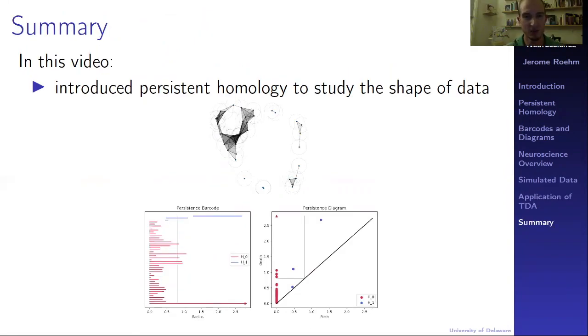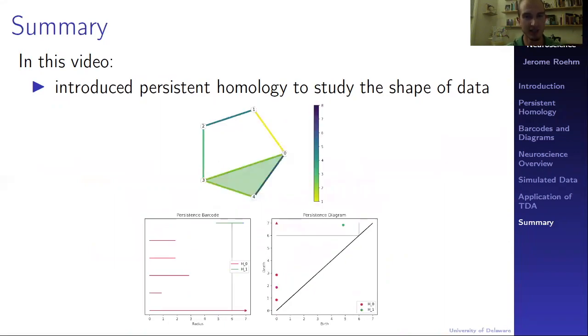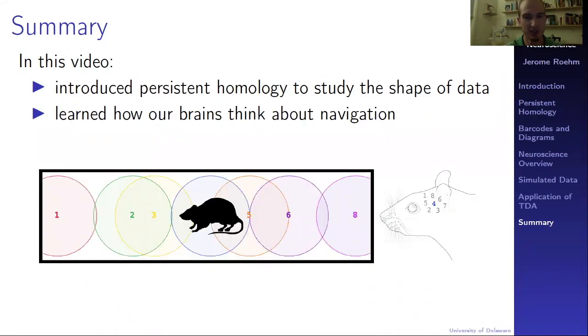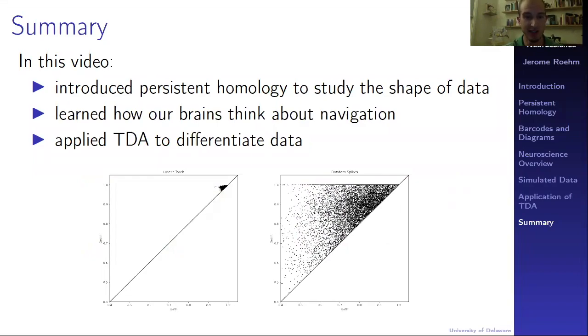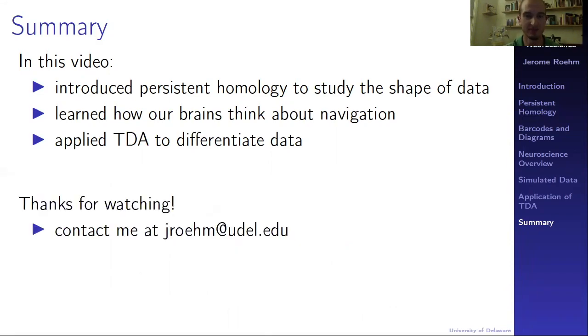In summary, we introduced persistent homology to study the shape of data, both in a geometric context as well as a non-geometric one. We learned how our brains think about navigation and applied TDA to help differentiate data. Thanks so much for watching. In order to make this video short and accessible, I omitted many details. If you have any questions or comments, I would love to hear them. Bye!